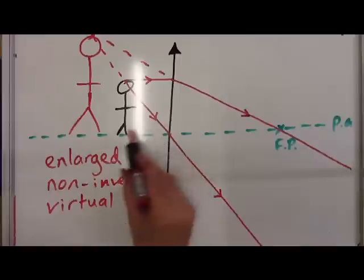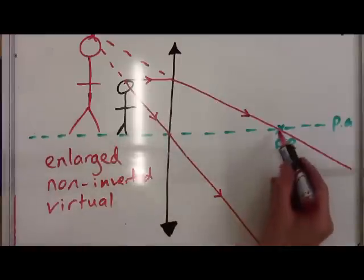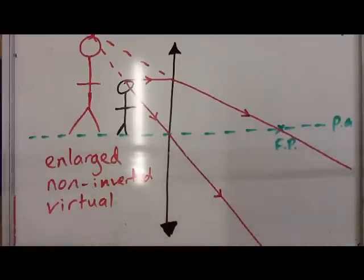Okay, and that's if the object is closer to the lens than the focal distance, so the distance between the focal point and the lens itself.